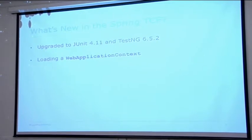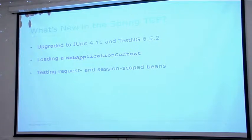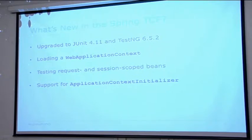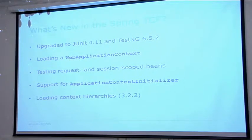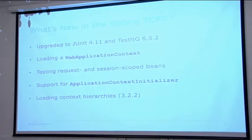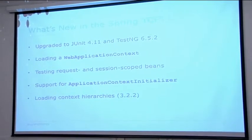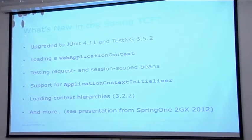Loading a web application context is a big new feature. This also allows us to test both request and session scoped beans — we'll see some examples of that. Another smaller feature is support for application context initializers, something added in Spring 3.1. And loading context hierarchies was not added in Spring 3.2 because I didn't finish the work, but I finished it by 3.2.2, so it's available as of 3.2.2.